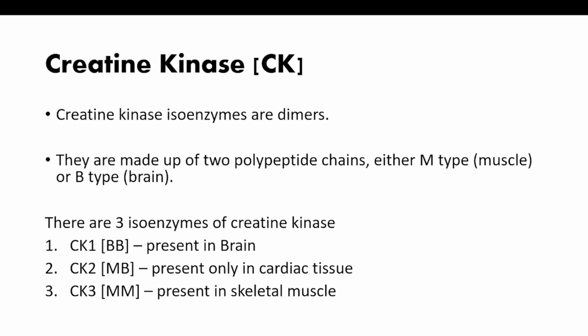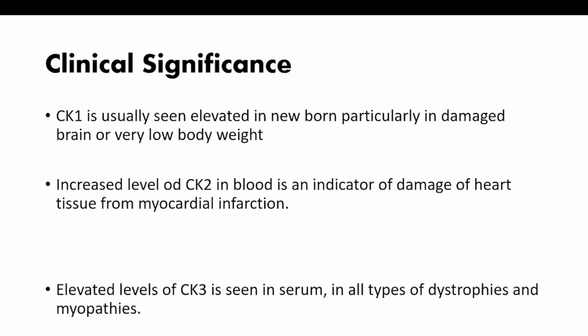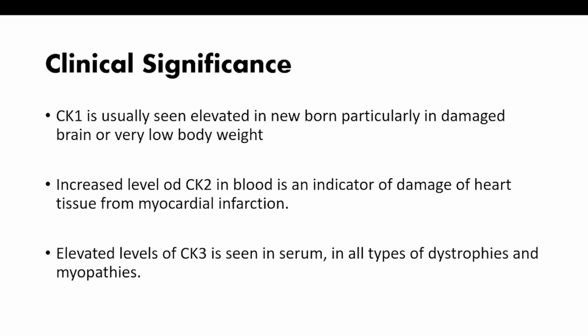Creatine kinase is a dimeric enzyme made up of two polypeptide chains — either M type (muscle type) or B type (brain type). There are three isoenzymes of creatine kinase: CK1, CK2, and CK3. CK1 is the BB type, present in the brain; CK2 is the MB type, present only in cardiac tissue; and CK3 is the MM type, present in skeletal muscles. CK may be elevated in newborns, particularly in cases of damaged brain or very low birth weight.